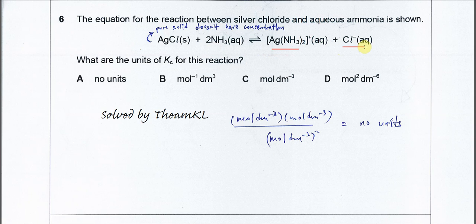Okay, so first you need to understand that solid will not be considered in the units of Kc. So when we try to get the units of Kc, we exclude the contribution from the solid. That's why now it just involves ammonia with the complex ion and the chloride.